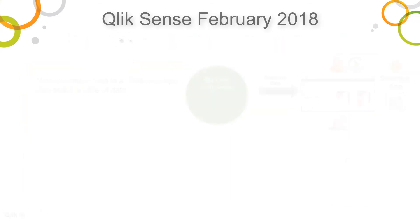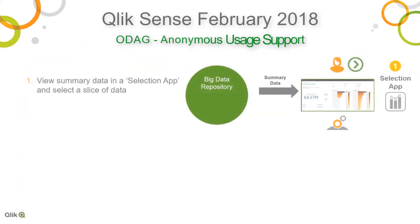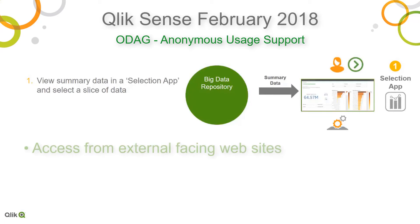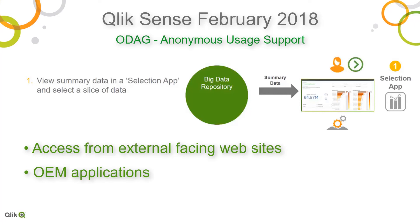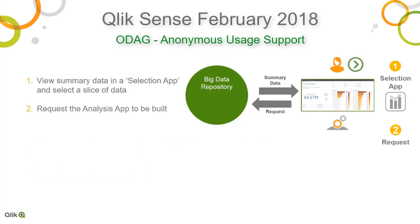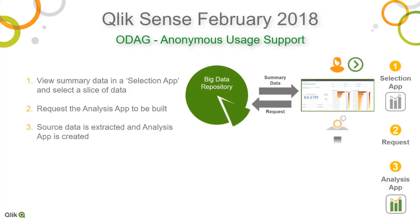Improving how Qlik Sense works with big data, we've included anonymous usage support for on-demand app generation, allowing this capability to now be used anonymously from external facing websites and within OEM scenarios. On-demand app generation is a feature supporting one of our big data methodologies that is used in situations where each user wants to explore their own slice of data.